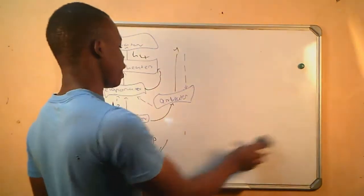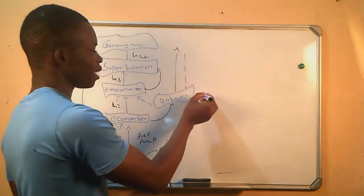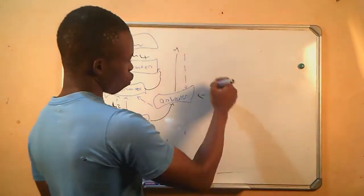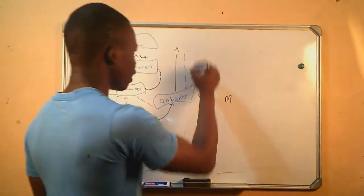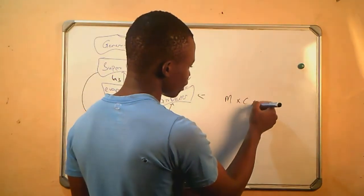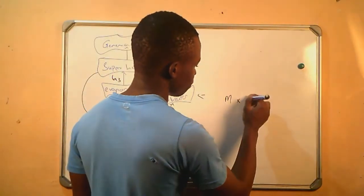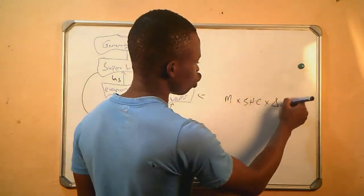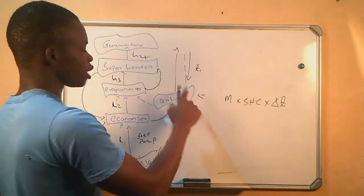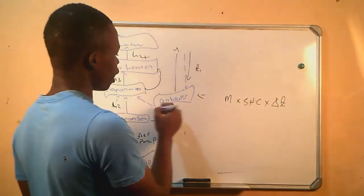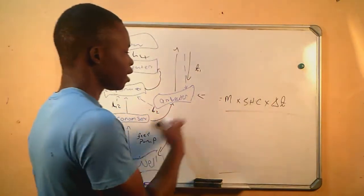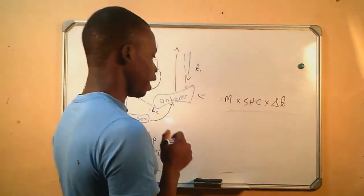Another component where heat is gained is the air heater. To calculate the heat energy that is gained there, you are going to say the mass of the air entering times the specific heat capacity times the change in temperature — which is the temperature of the air before the air heater and the temperature of the air after the air heater, T2. This gives you the heat energy that was transferred in the air heater.